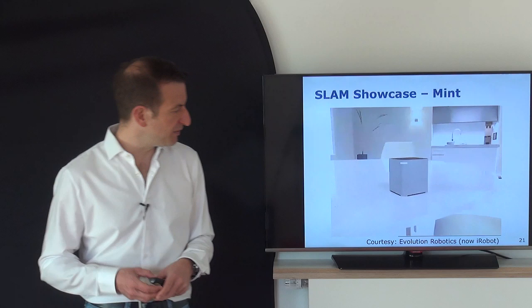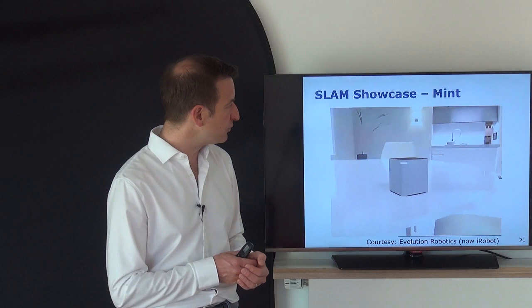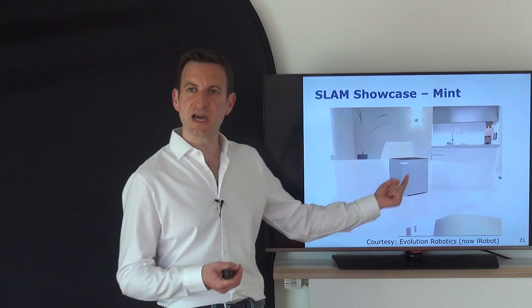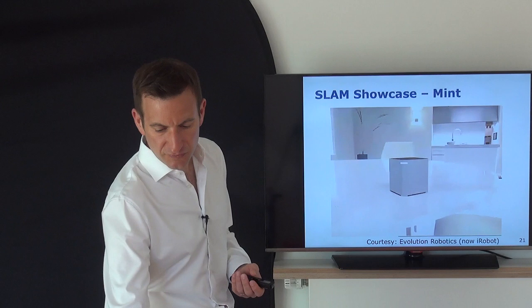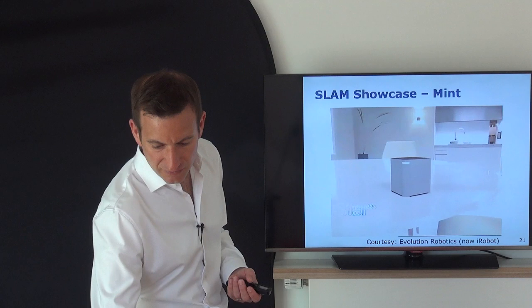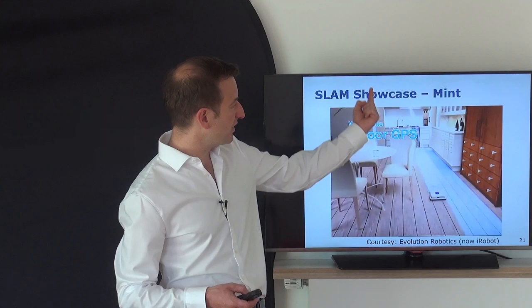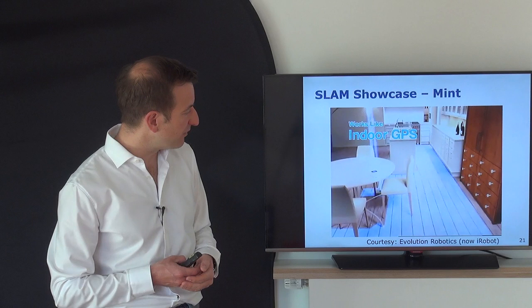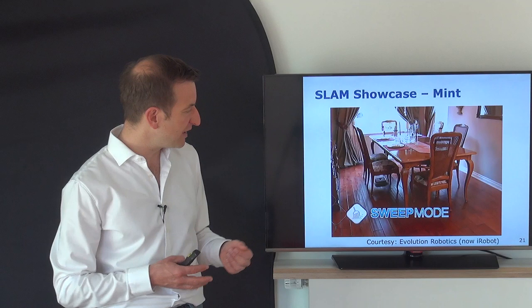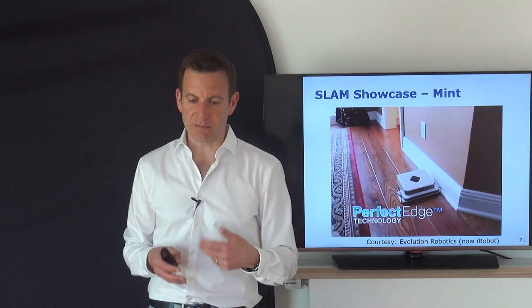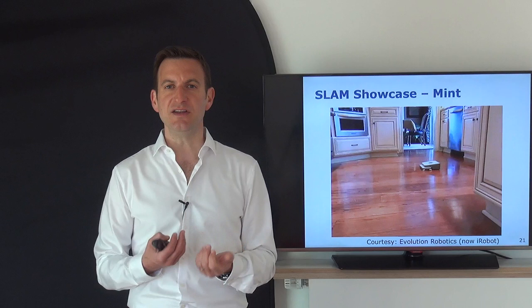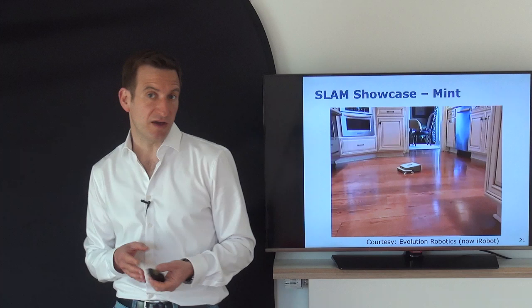Here is a short example: the Mint cleaning system, one of the early cleaning systems now owned by iRobot, originally built by Evolution Robotics. It used a North Star system — a small projector projecting infrared patterns to the ceiling. The system perceives those artificially created landmarks and builds a SLAM system to perform systematic cleaning. A video shows the cleaning robot driving through the environment using the ceiling pattern, cleaning the floor systematically rather than doing random walks, including navigating around obstacles.